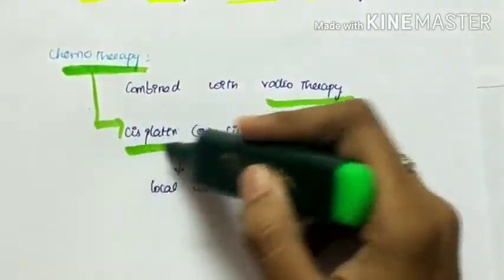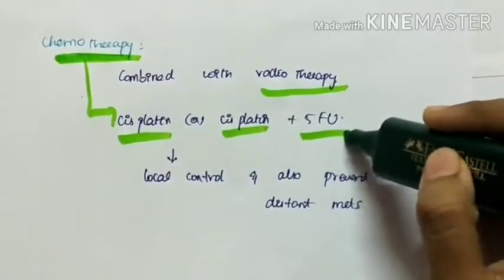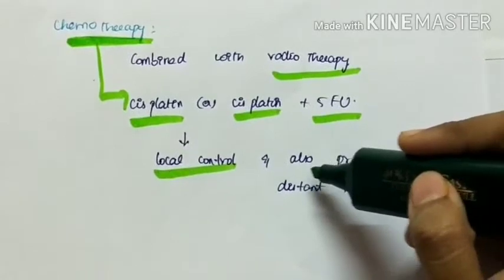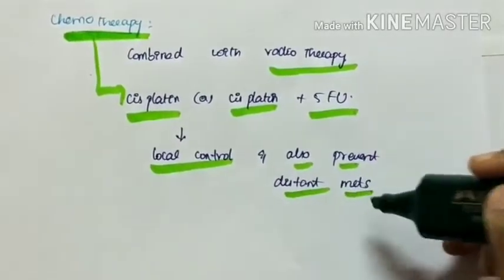The drugs used in chemotherapy are cisplatin or cisplatin combined with 5-fluorouracil. This helps in local control and also prevents distant metastasis.